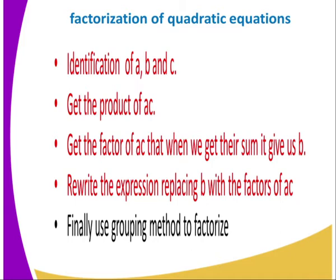Get the product of ac. After getting the product of ac, get the factors of ac that when we get their sum, it gives us b. Then rewrite the expression, replacing b with the factors of ac. And then finally, using the grouping method, we factorize. Those are the steps that we follow when factorizing an equation.